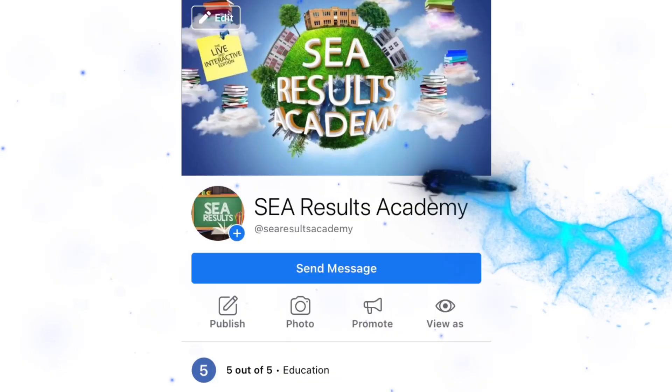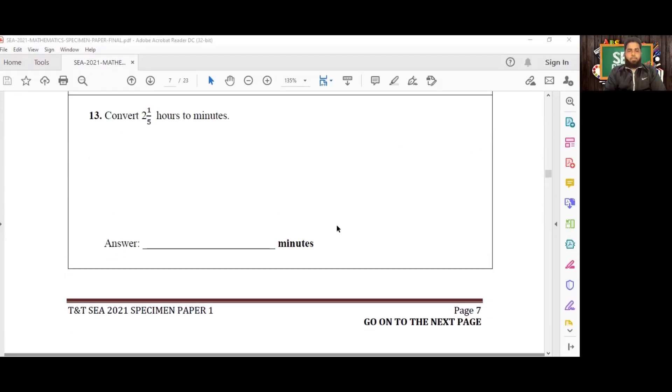Okay, now let's get back to the video. So here we are with number 13. Convert two and one-fifth hours to minutes. First of all, we have to know how many minutes there are in one hour. There are 60 minutes in one hour. So we can convert the two hours quite easily into minutes: two multiplied by 60 is going to give me 120 minutes.